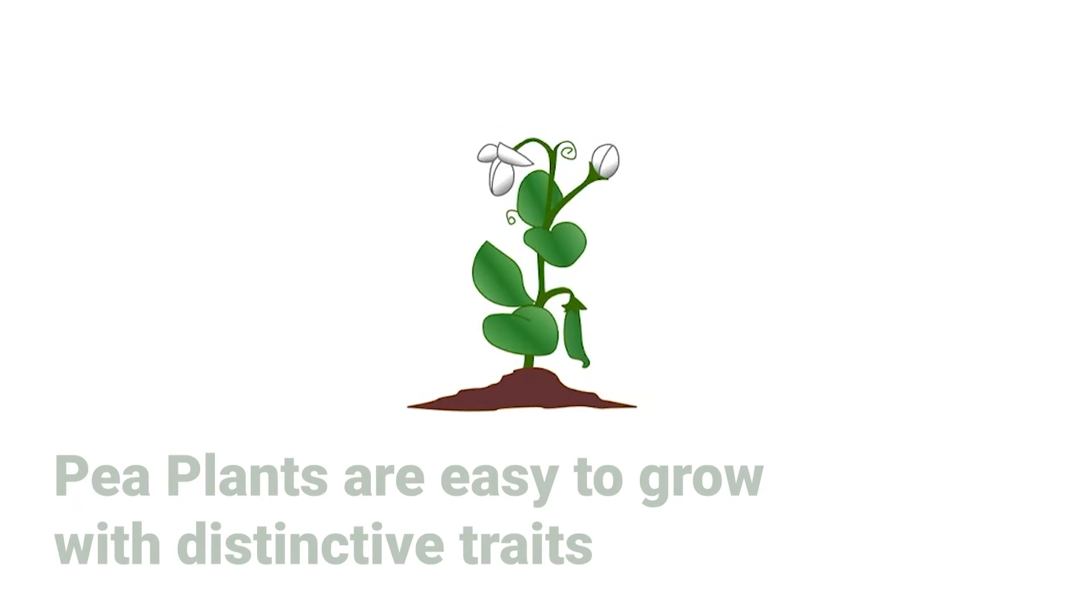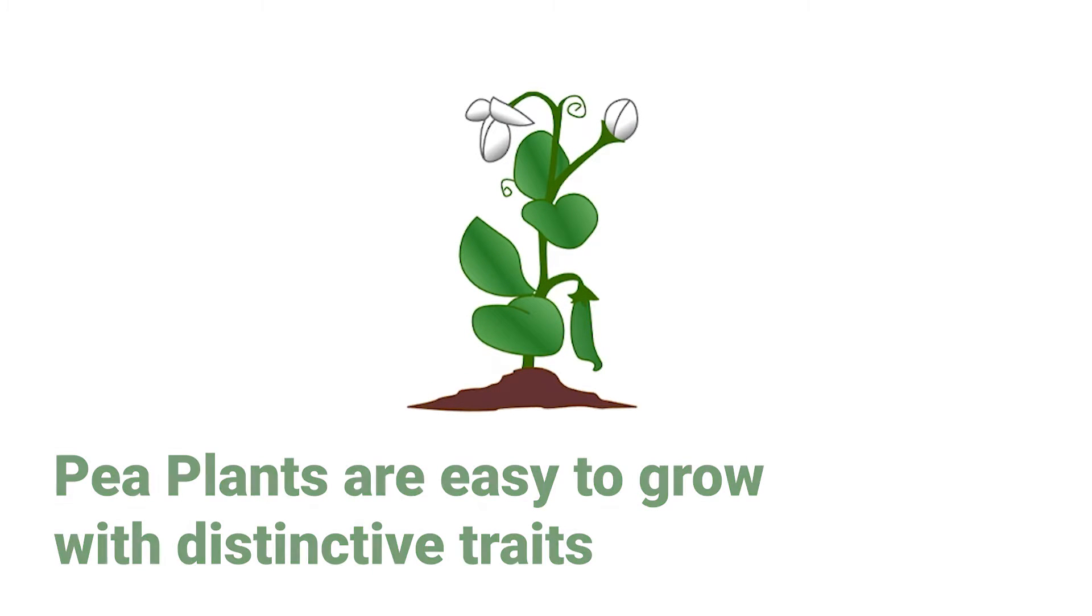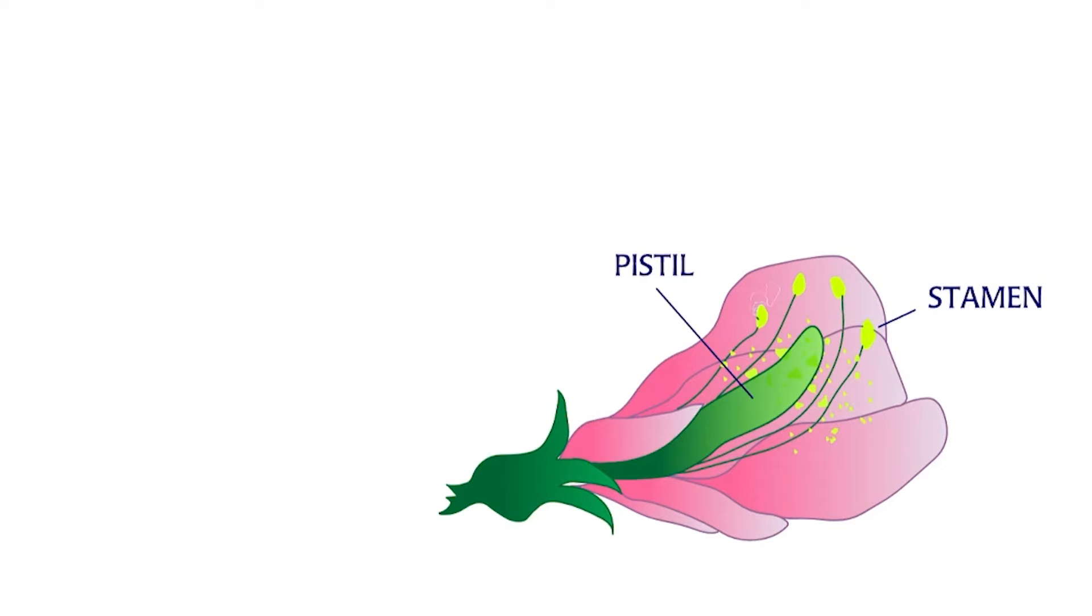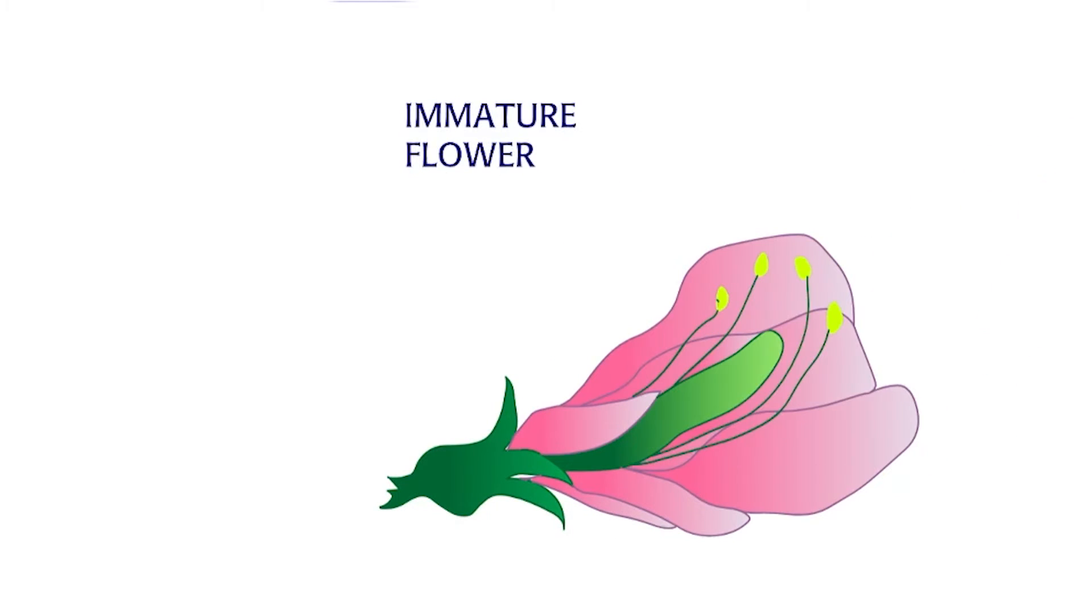Gregor Mendel worked on pea plants as they are easy to grow and have distinguishing traits tracked from generation to another. Pea plants self-fertilize. For cross-fertilization, Mendel opened the immature flower, cut the stamens, and later dusted its pistil with pollen from another plant.